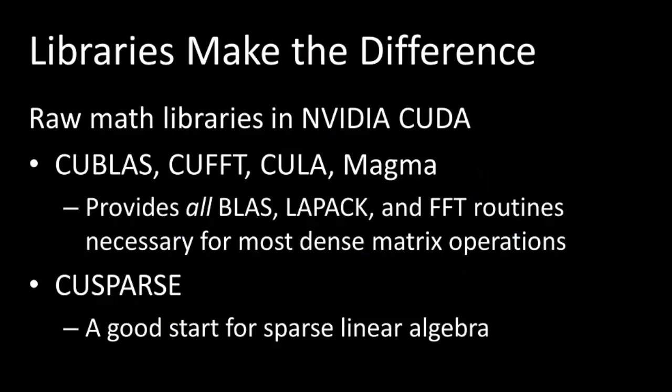Libraries really make all the difference in GPU computing. To compare CUDA versus OpenCL, it's important to look at the libraries available. Raw math libraries in CUDA include cuBLAS, cuFFT, CULA, and MAGMA — pretty much complete for dense matrix operations. CUDA also has cuSPARSE, a good start for sparse linear algebra but still maturing. CUDA libraries run only on NVIDIA GPUs; NVIDIA does not provide libraries for OpenCL.